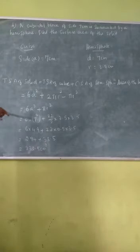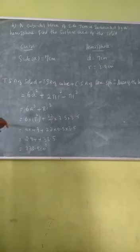A will be 7 and r will be 3.5. At last we have 6 into 7² plus 22/7 into 3.5 into 3.5.